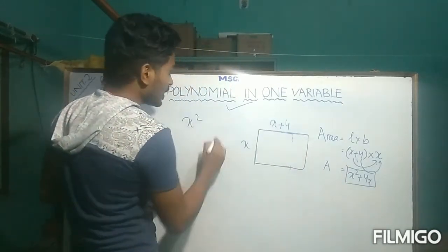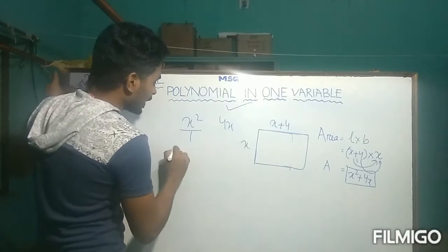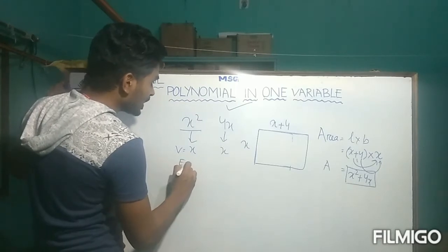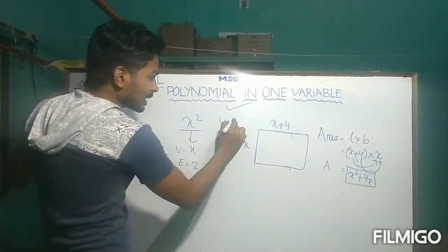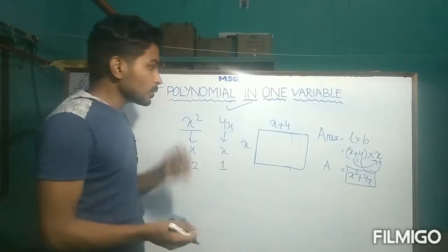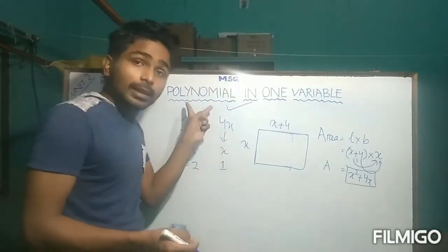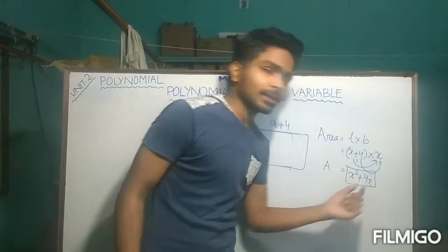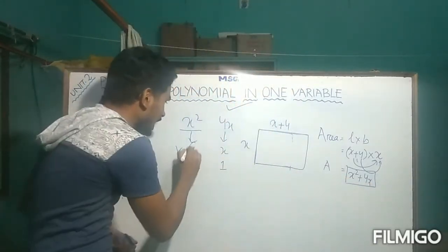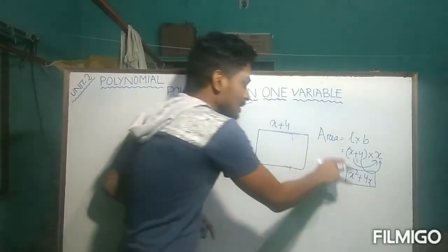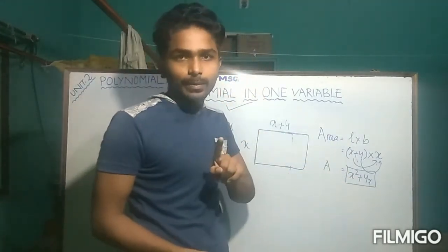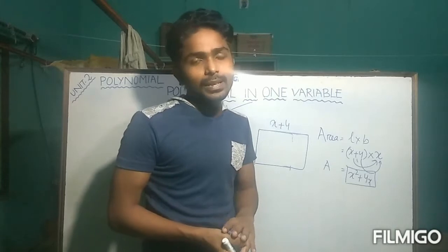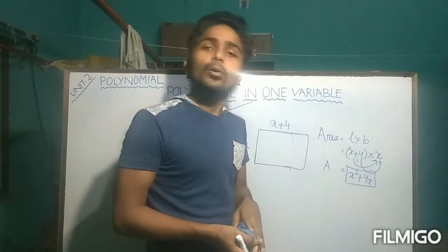The two terms are X² and 4X. In X², the variable is X, and in 4X the variable is also X. Here the exponent is 2 and here the exponent is 1. In these two terms we have the same variable, and the total expression contains only one variable, that is X. Since the expression contains only one variable, it is known as a polynomial in one variable.